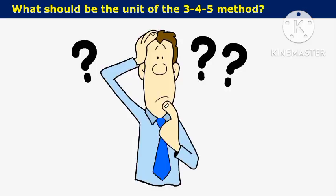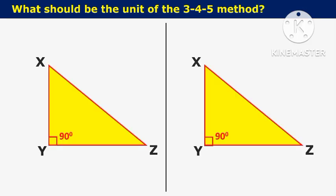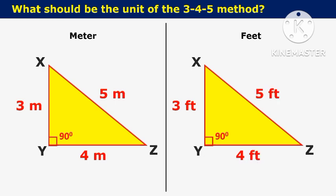Now another question can arise: what should be the unit of the 3-4-5 method? You can use any unit of measurement in this 3-4-5 rule. Suppose if you measure the sides in meters, like 3 meters and 4 meters length, the hypotenuse should be measured for 5 meters length. Similarly, for 3 feet and 4 feet measurement, the hypotenuse becomes 5 feet.